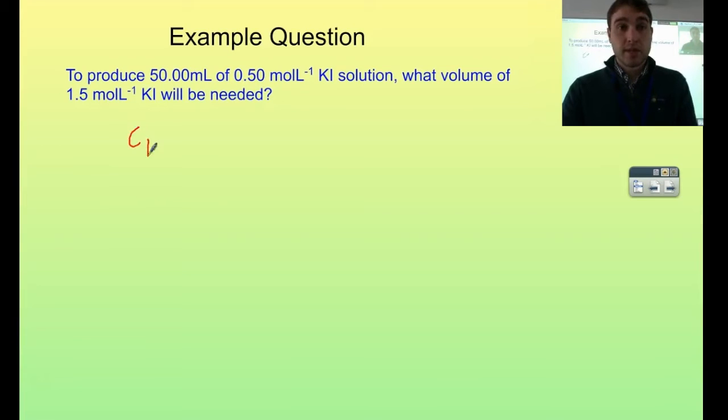So we've got C1V1 equals C2V2. I'm going to use this one as my first initial one so we can figure out the volume. Concentration there is 1.5 moles per litre and we don't know what volume we need, so I'm keeping that as V1. My second concentration is 0.50 moles per litre, and we multiply that by the volume. I'm going to turn that into litres. We've got 50 mL, so that's 0.05 litres.